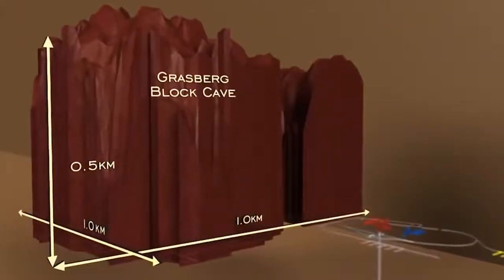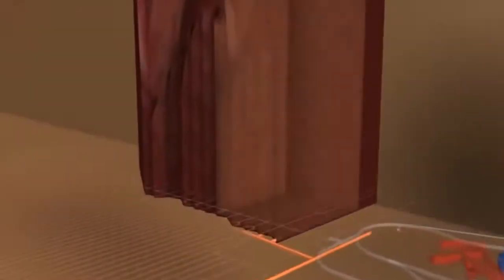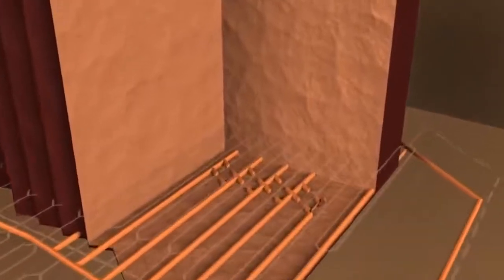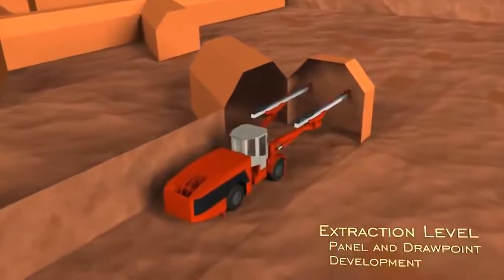The Grasberg block cave, with one billion tons of ore, has a footprint of almost 200 football fields, with a height exceeding the Empire State Building. The development of the mine is on the various levels. Here, panel development occurs on the extraction level as we drill and blast to develop the panel.